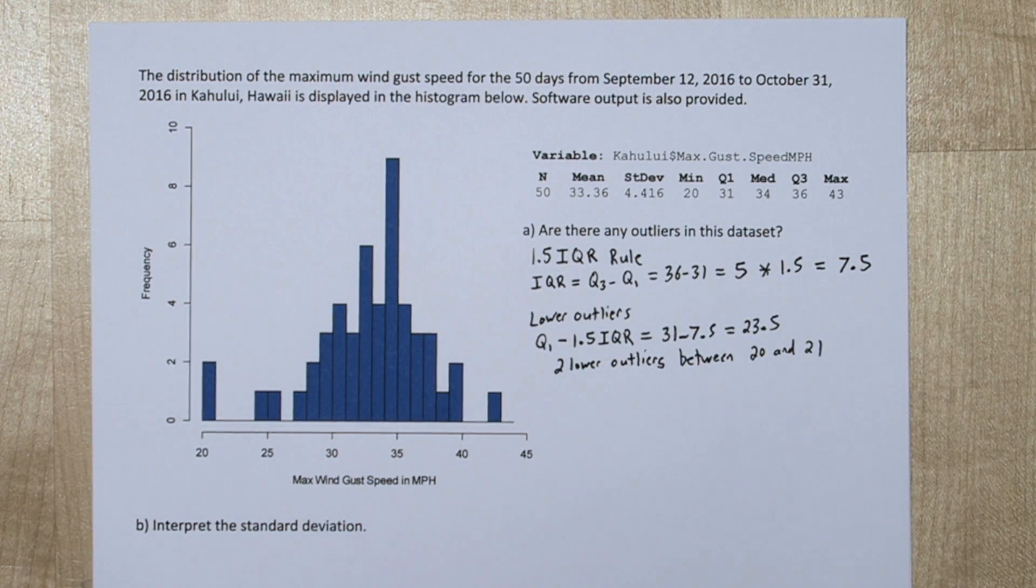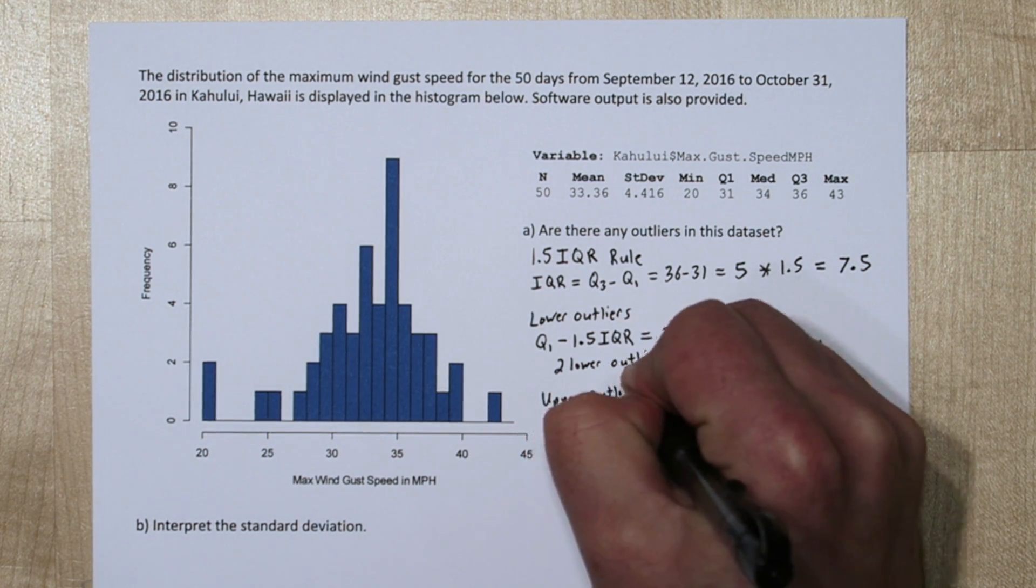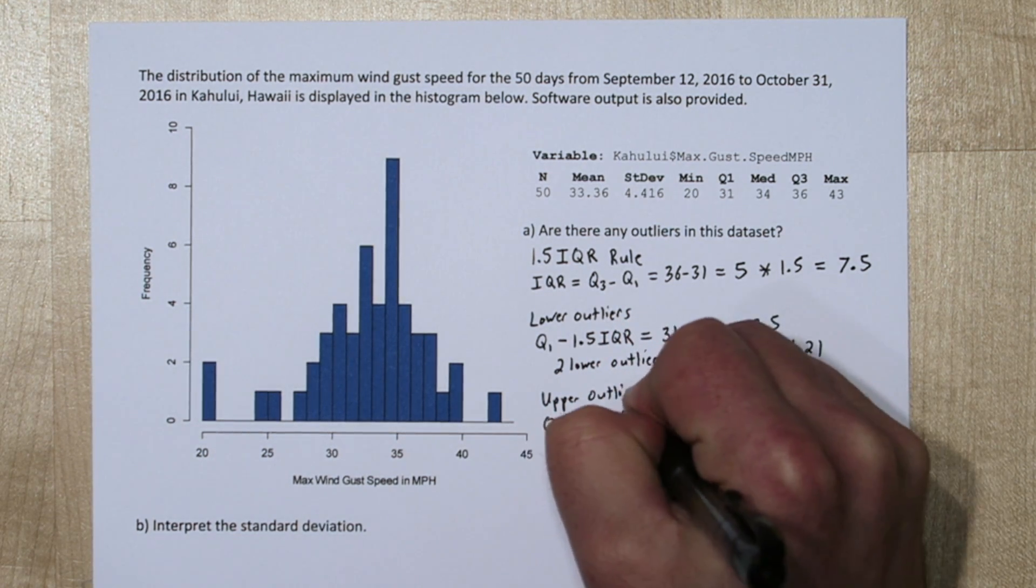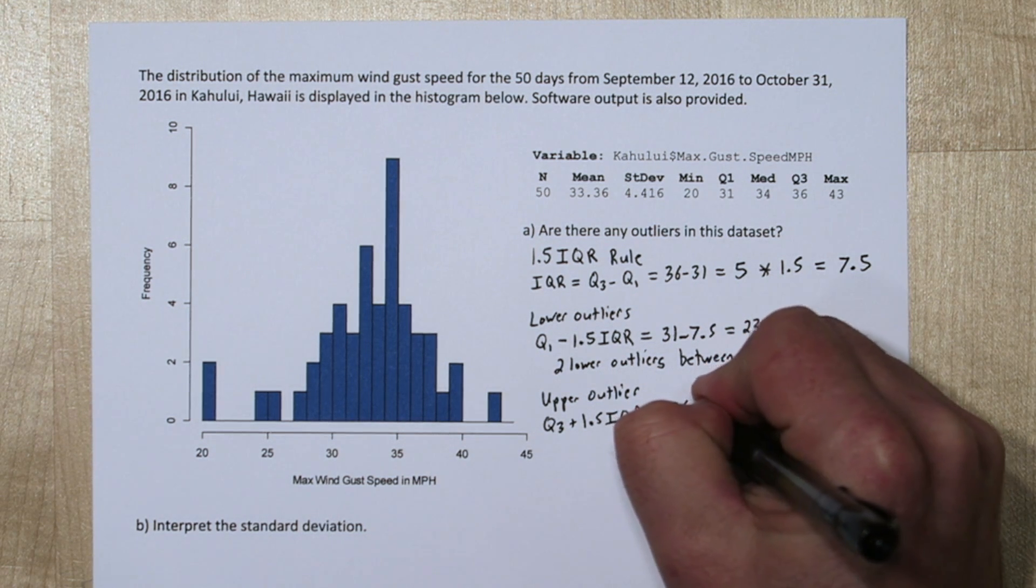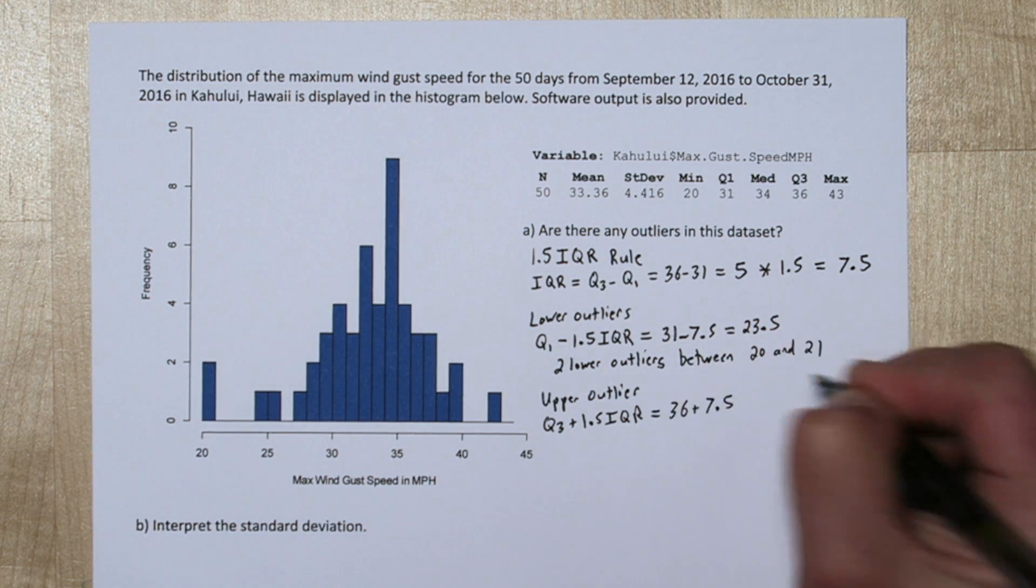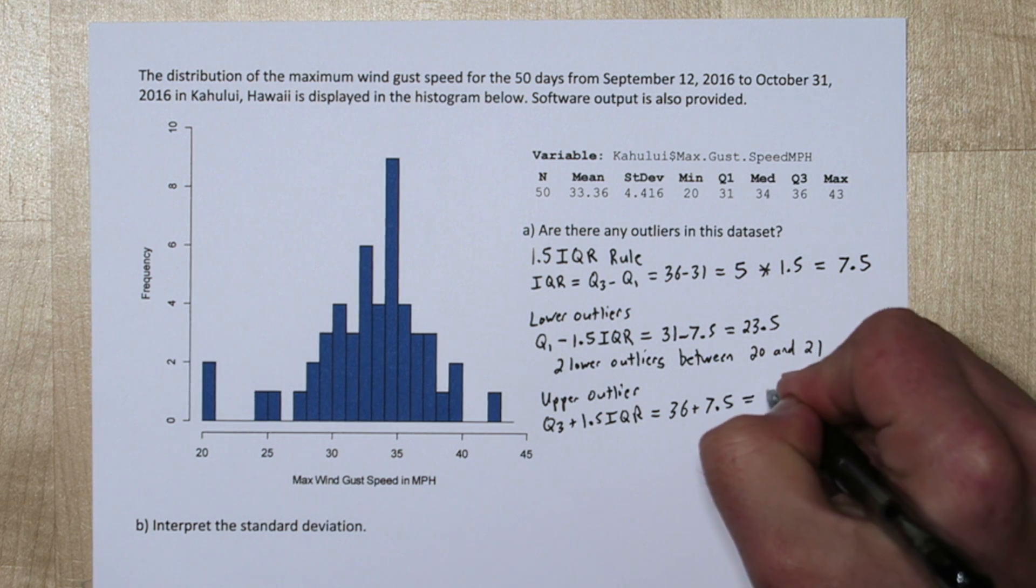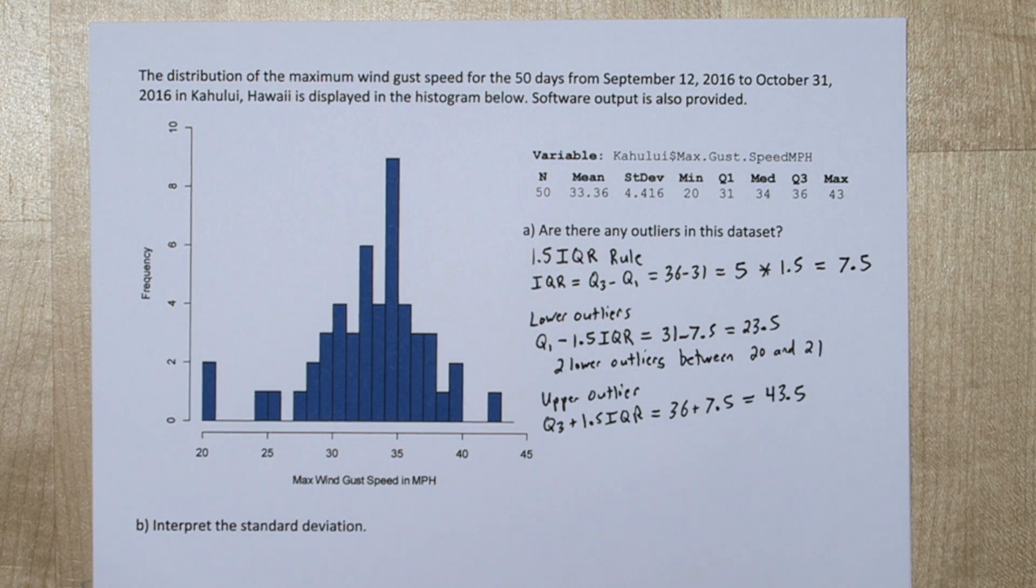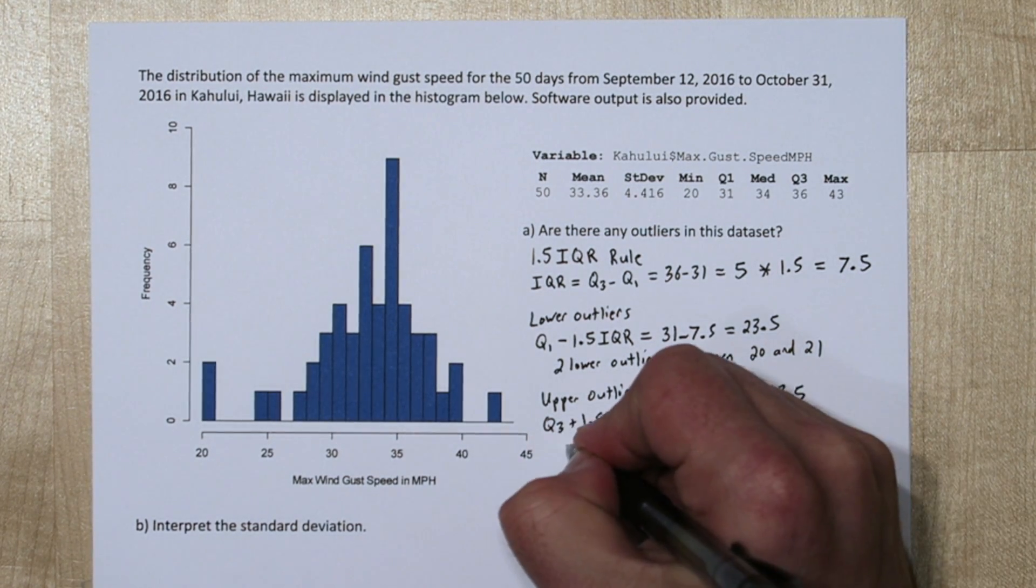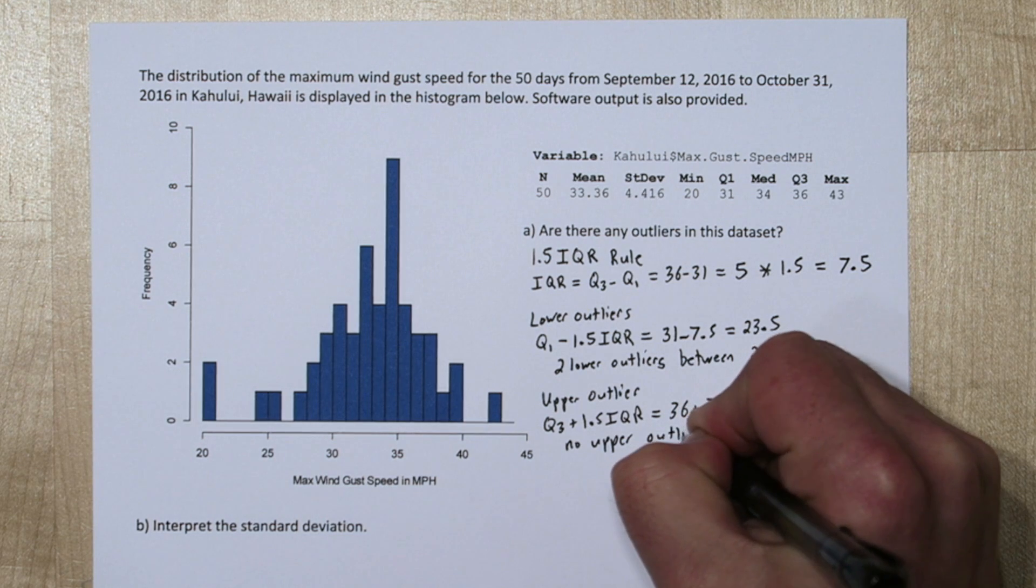Now let's check for upper outliers. Any value 1.5 IQRs greater than quartile 3 is an upper outlier. So quartile 3 is 36, and we'll add 1.5 IQRs, the 7.5, and we get the cutoff value of 43.5 mph. Now this value right here doesn't exceed 43.5, so we don't have any upper outliers.